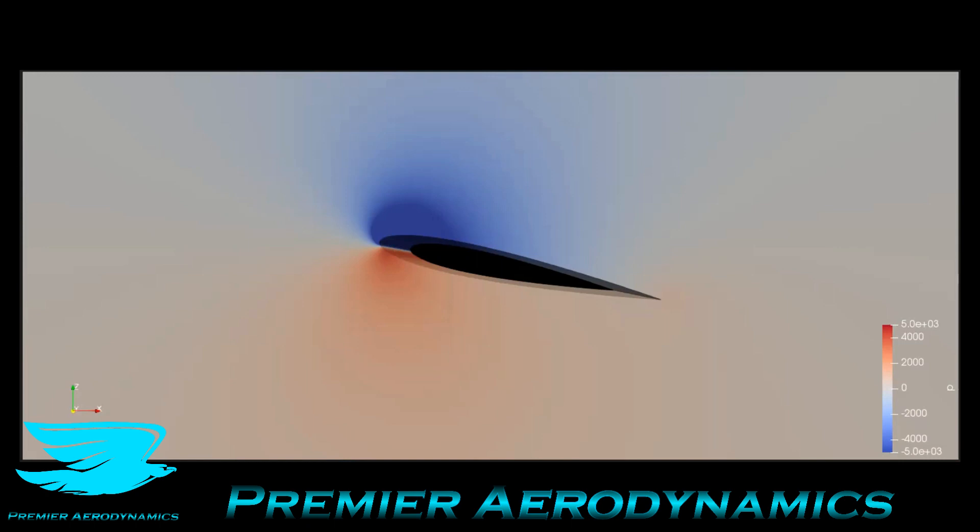First, we have the pressure distribution cut through the airfoil. The top surface is the suction surface, and the pressure ranges from -5,000 to 5,000 pascals. I've had to adjust the scale because the pressure differences in terms of gauge are getting greater compared to lower angles of attack.